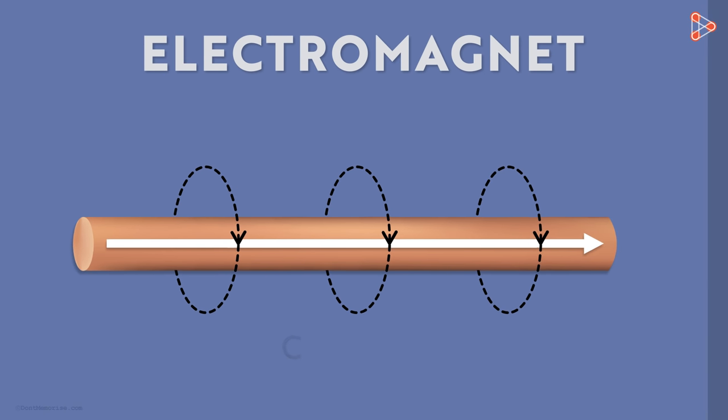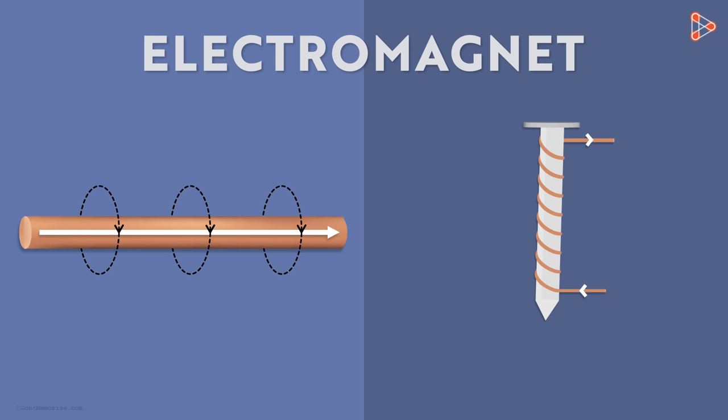However, we can make the magnet strong by wrapping the wire around a piece of iron, such as an iron nail. Even if the current is the same in both cases, this one will result in a stronger magnetic field.